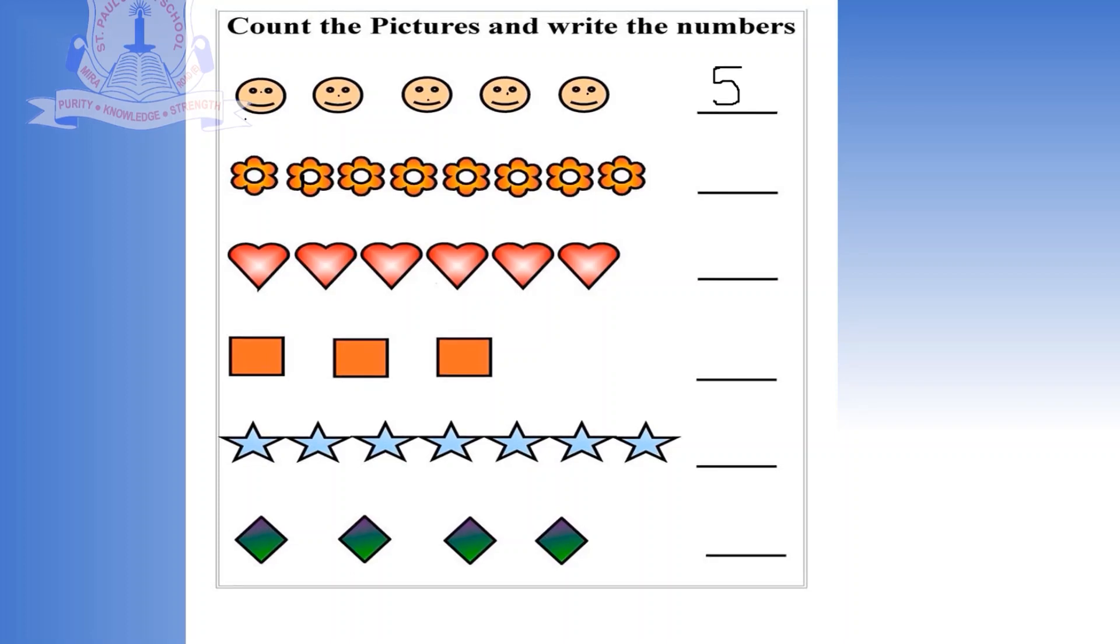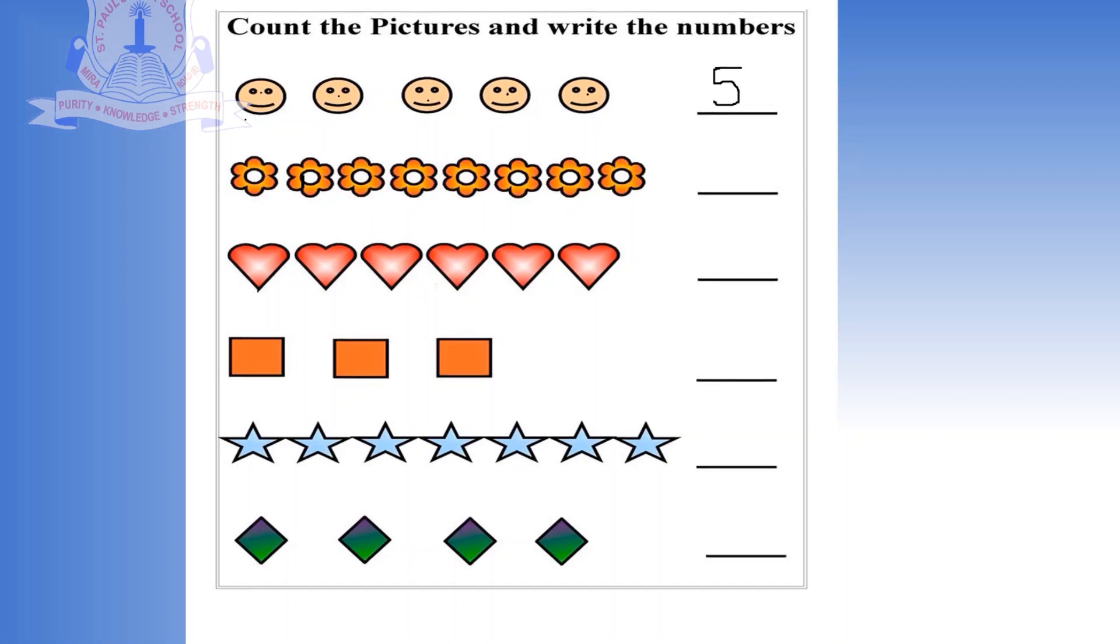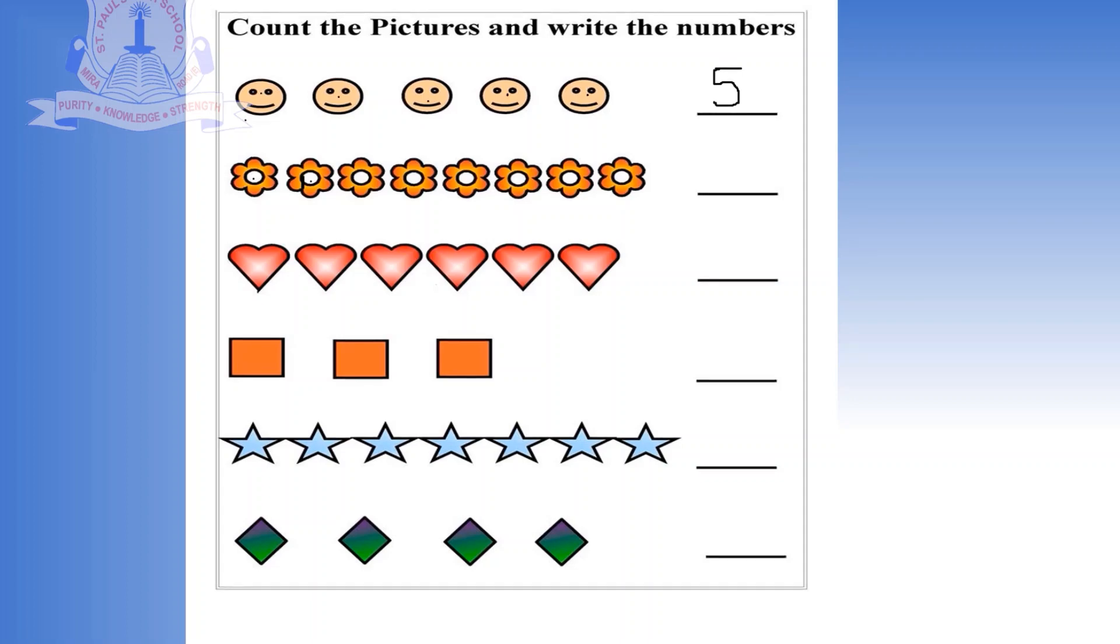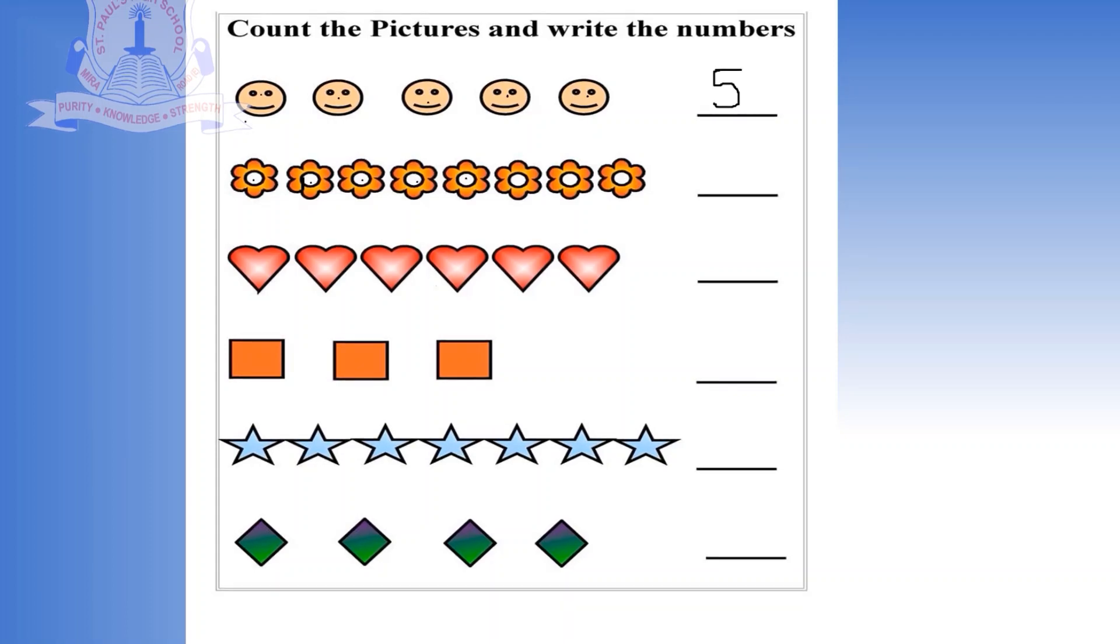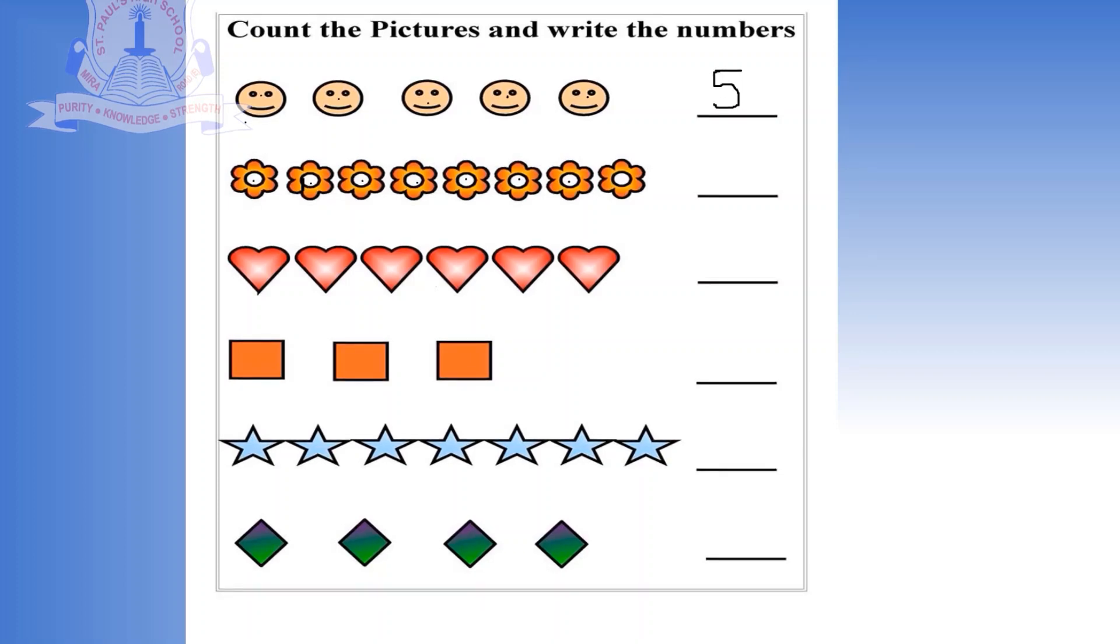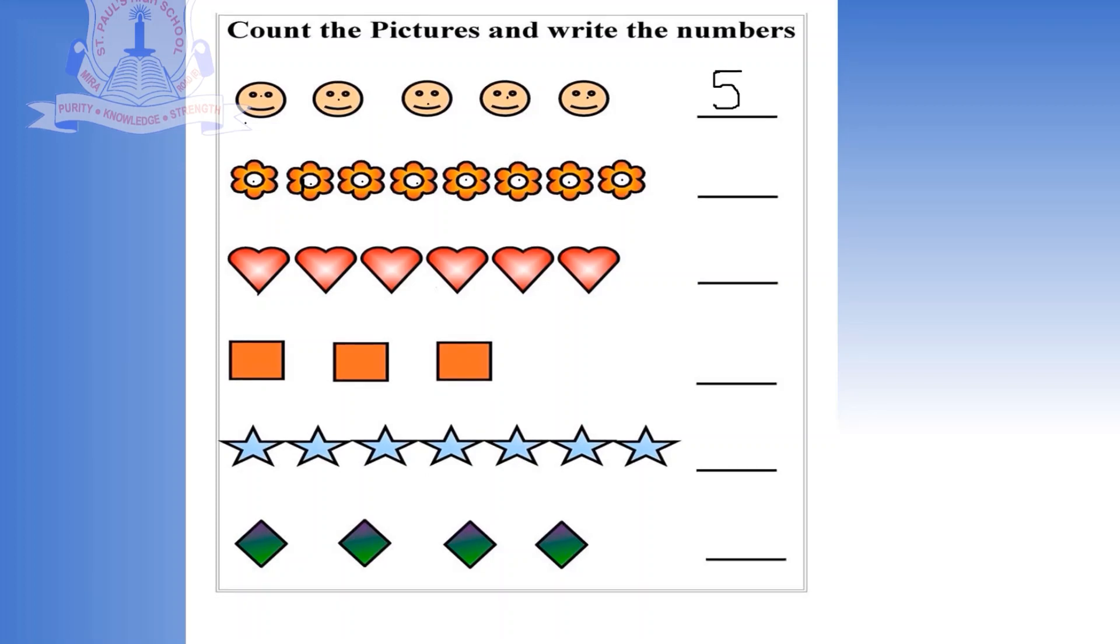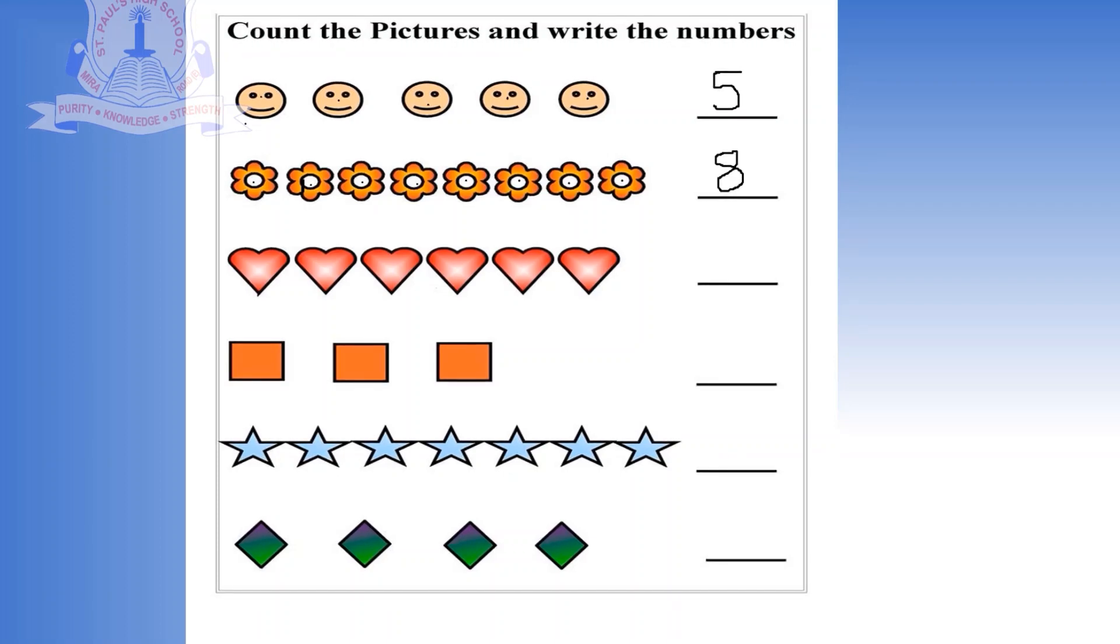What is this? Flowers. Let's start counting flowers. 1, 2, 3, 4, 5, 6, 7, 8. So how many flowers are there? So we will write number 8 here.